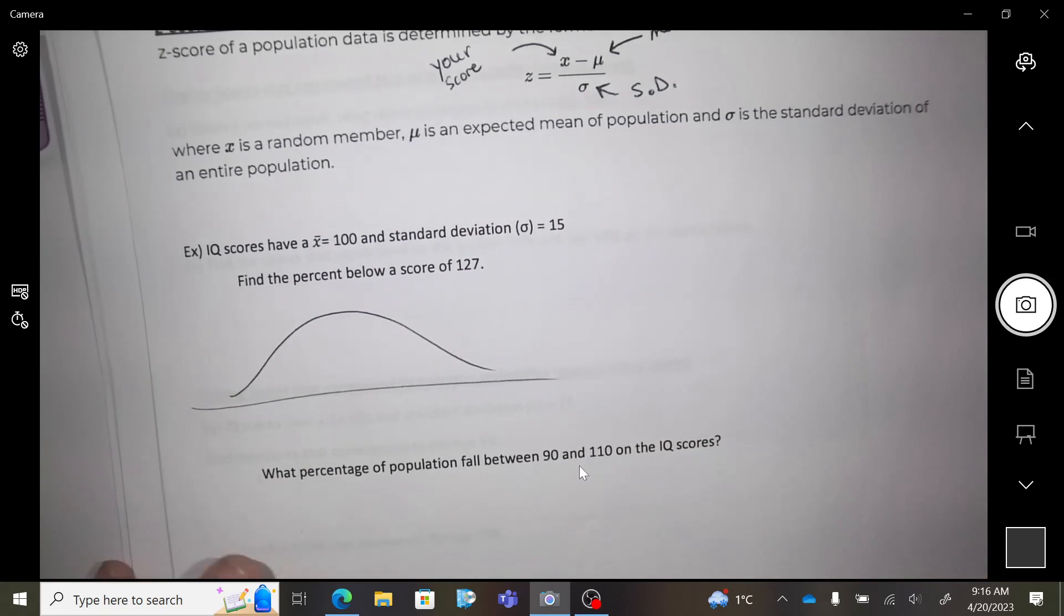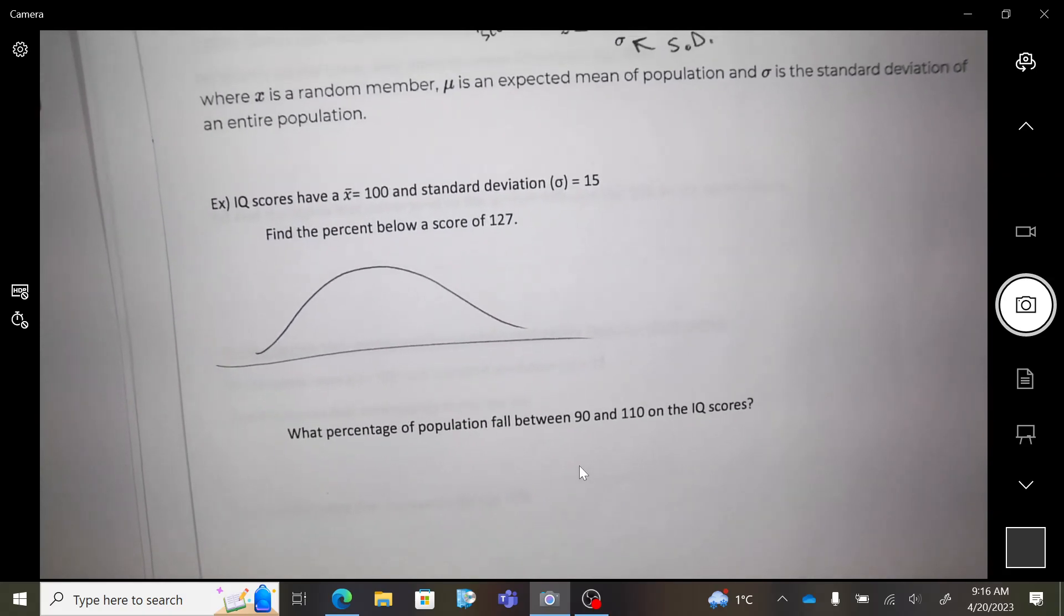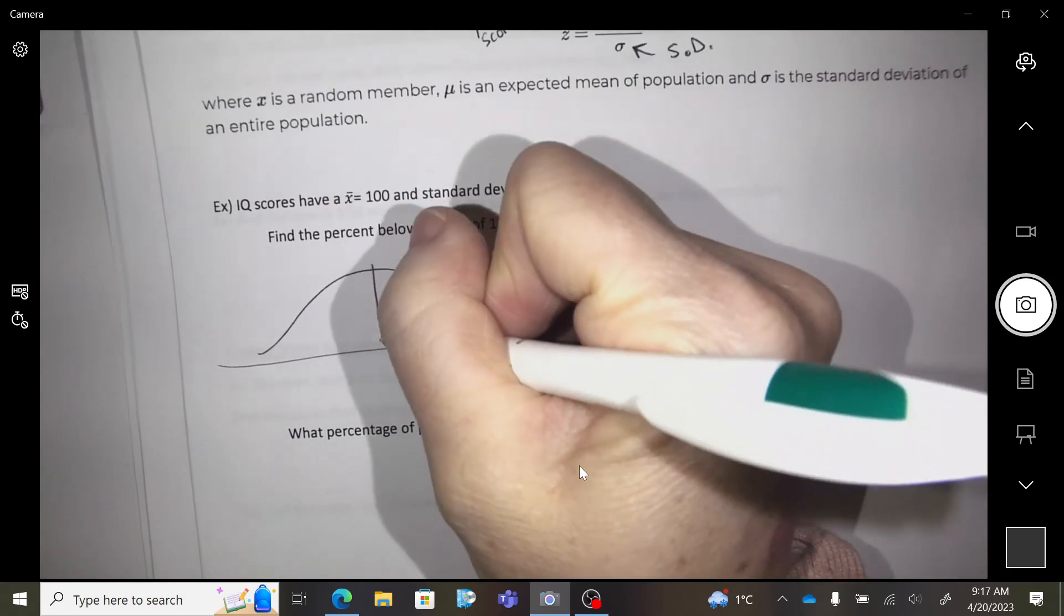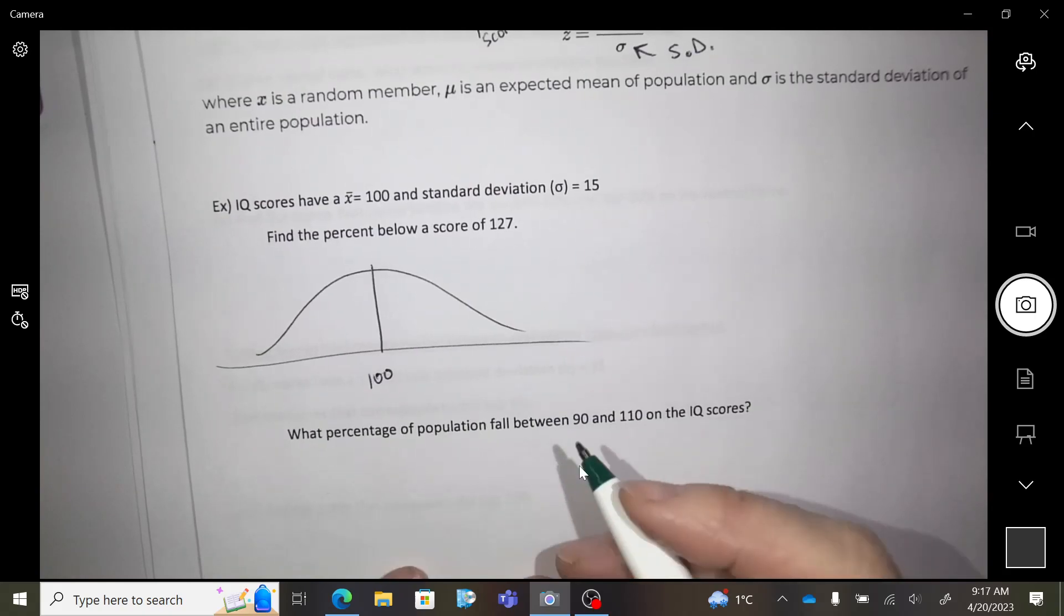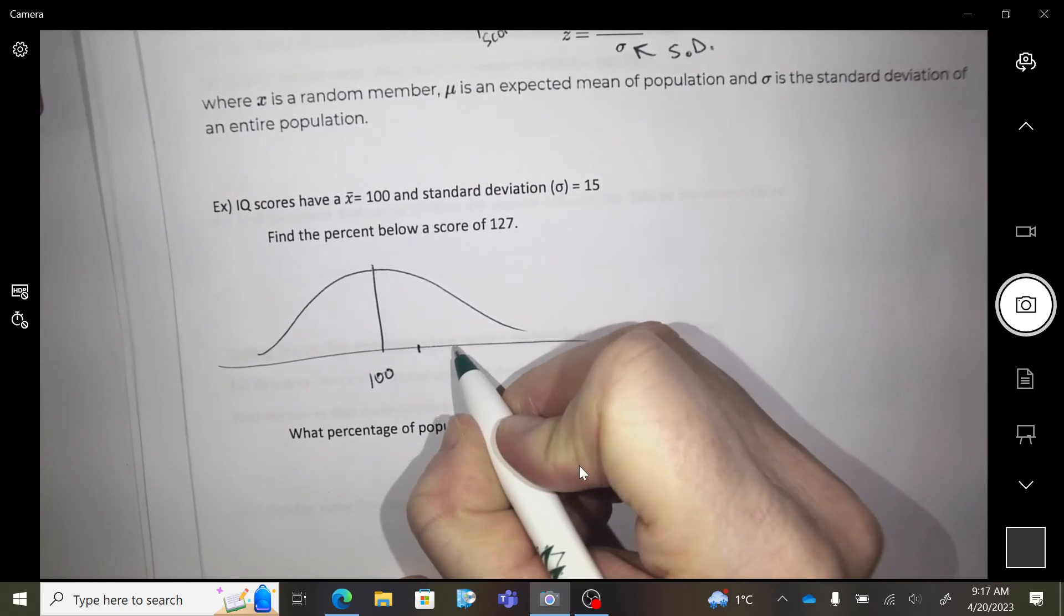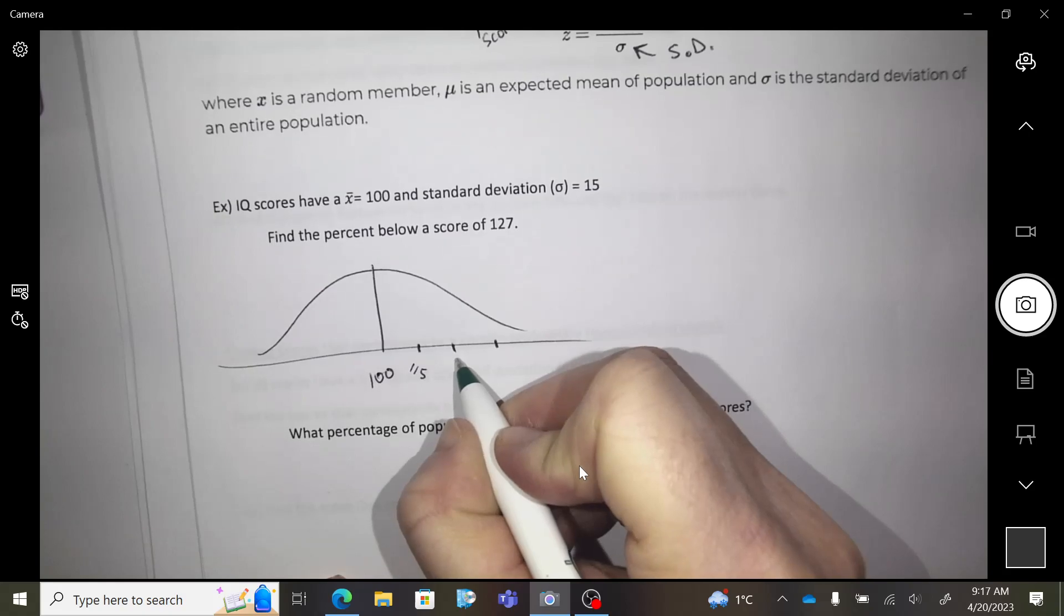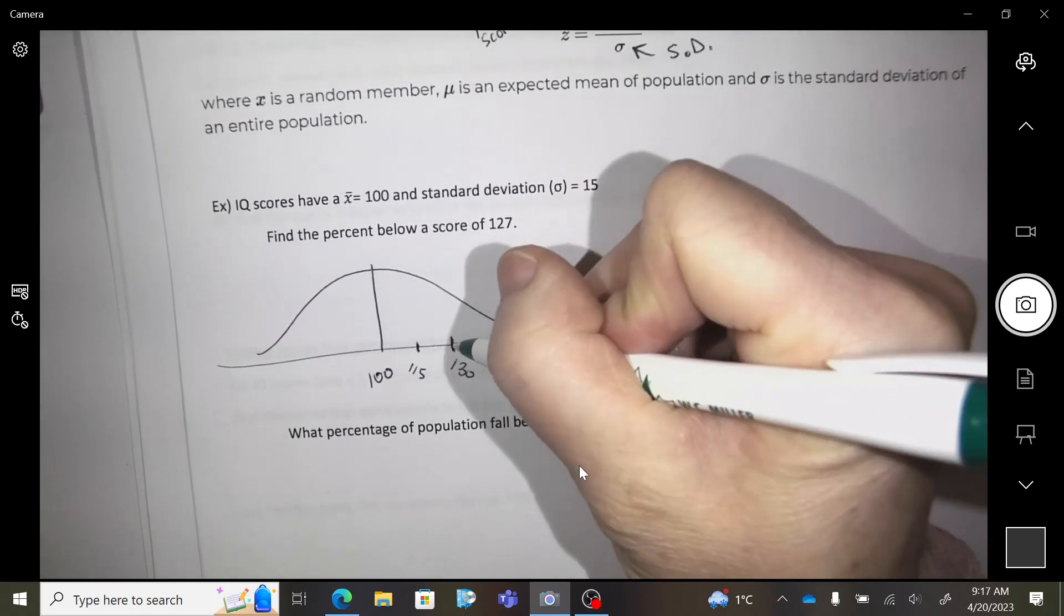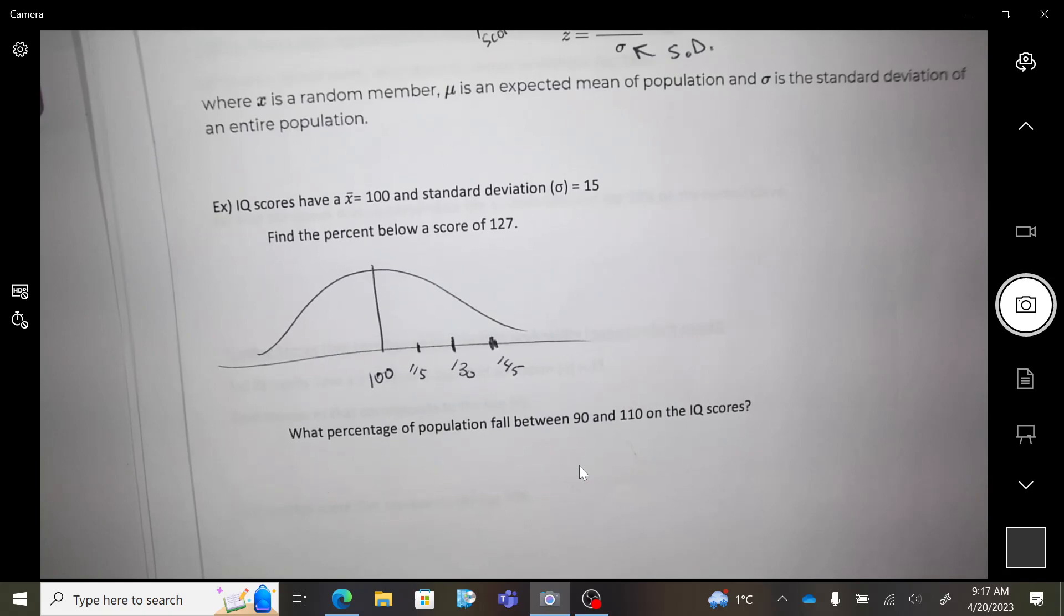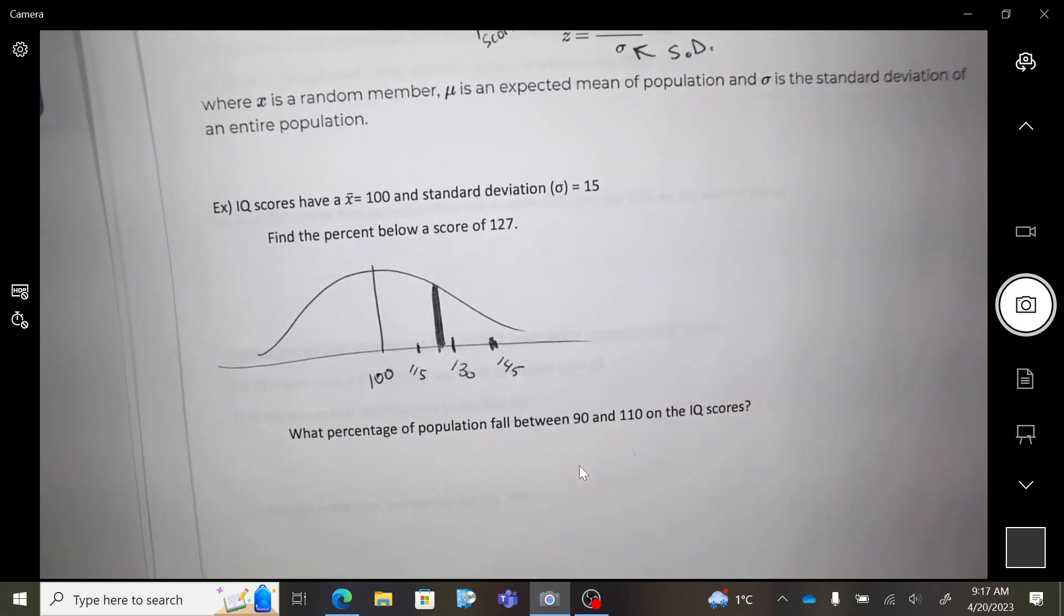Okay, here we go. IQ scores - if you take an IQ test, the average IQ test score is 100 and the standard deviation is 15. So I'm going to put 100 here to show you hundreds right in the middle. Where would you be if you scored 127? I'd be right there, right?